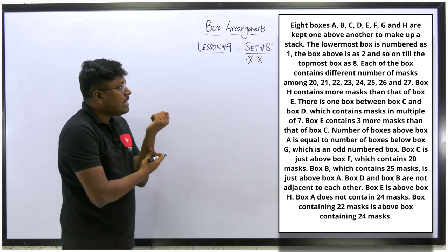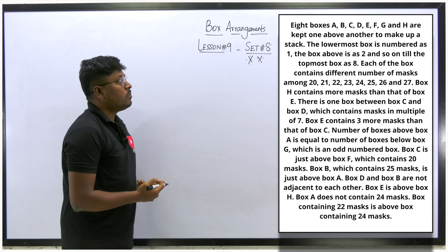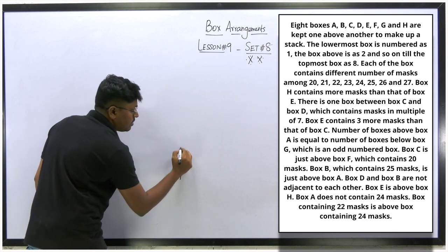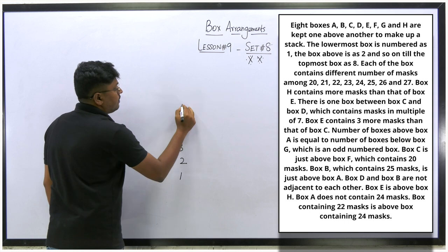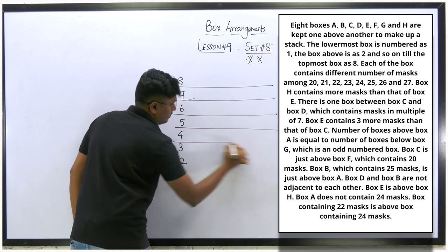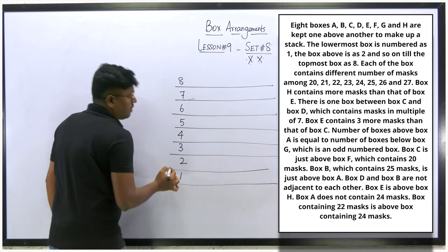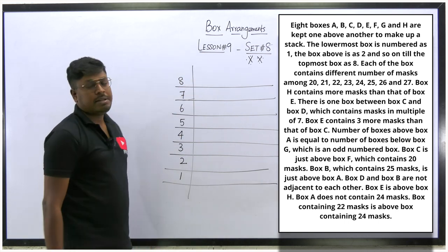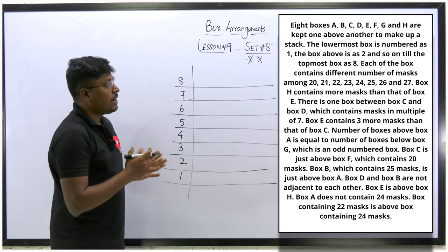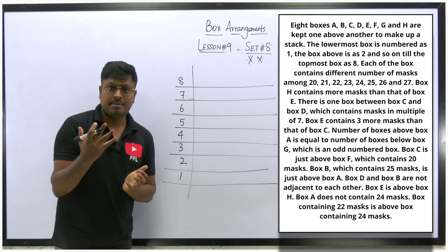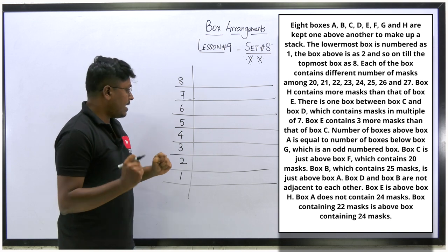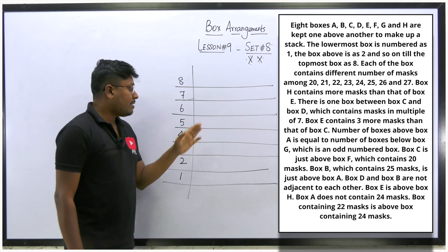The question states: eight boxes A to H are kept one above the other. The lowermost box is numbered one. So positions go from one at the bottom to eight at the top. Each box contains a different number of masks — 20, 21, 23, 24, 25, 26, 27, and so on. Our target is to find which box contains how many masks and where each box is placed.